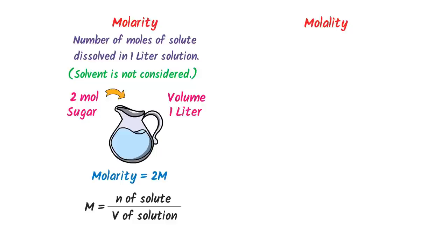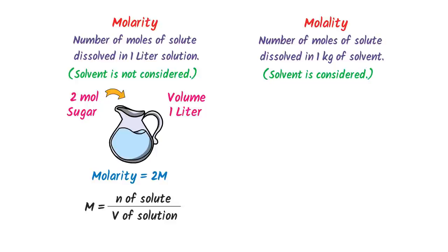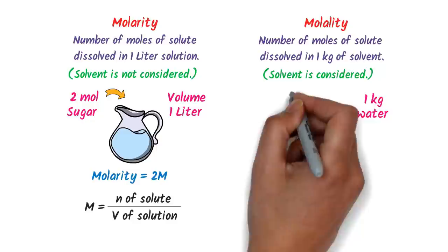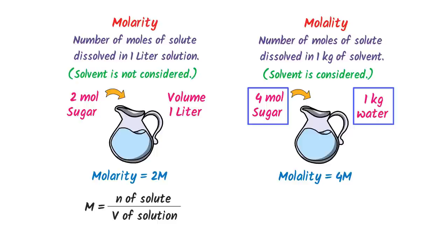Molality is the number of moles of solute dissolved in 1 kg of solvent. Note that we do consider the solvent in molality. For example, adding 4 moles of sugar to 1 kg of water gives a molality of 4 m. Molality is denoted by small m and equals number of moles of solute divided by mass of solvent in kg.